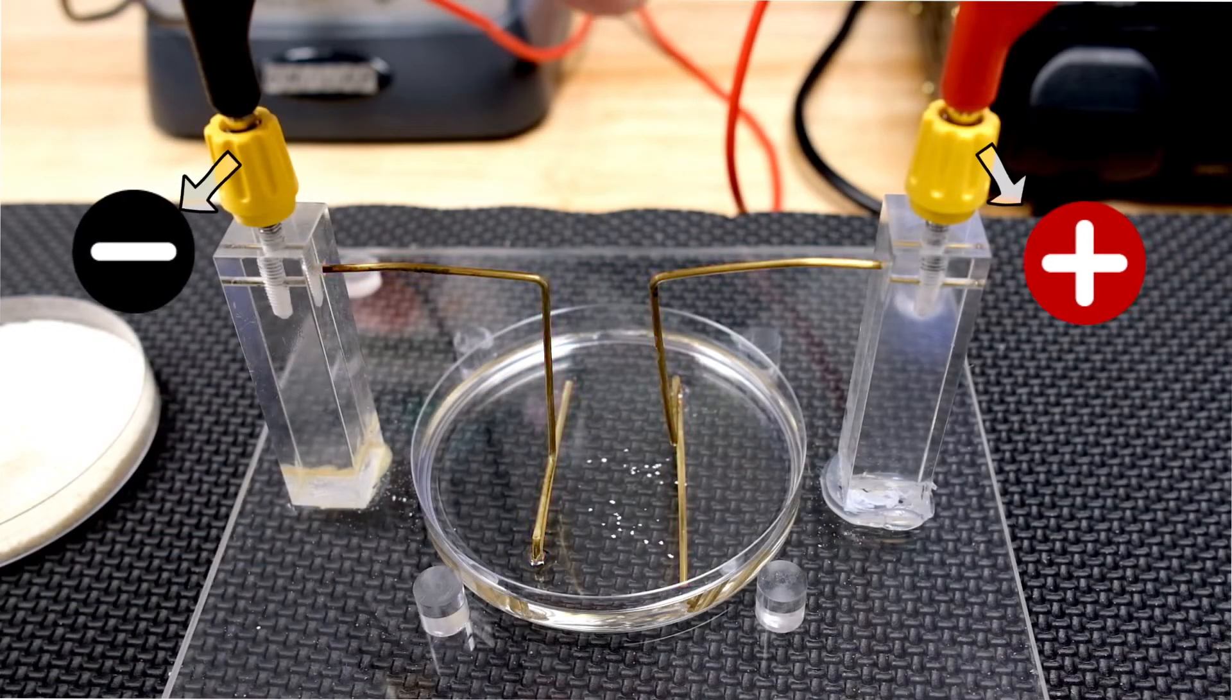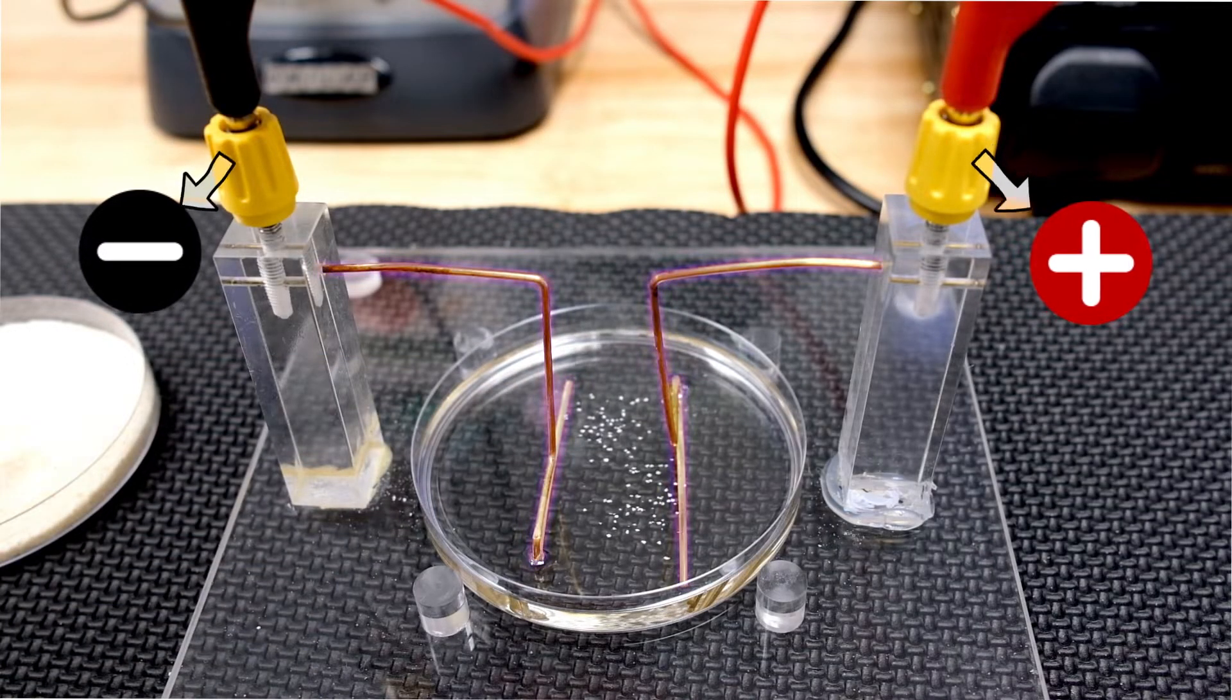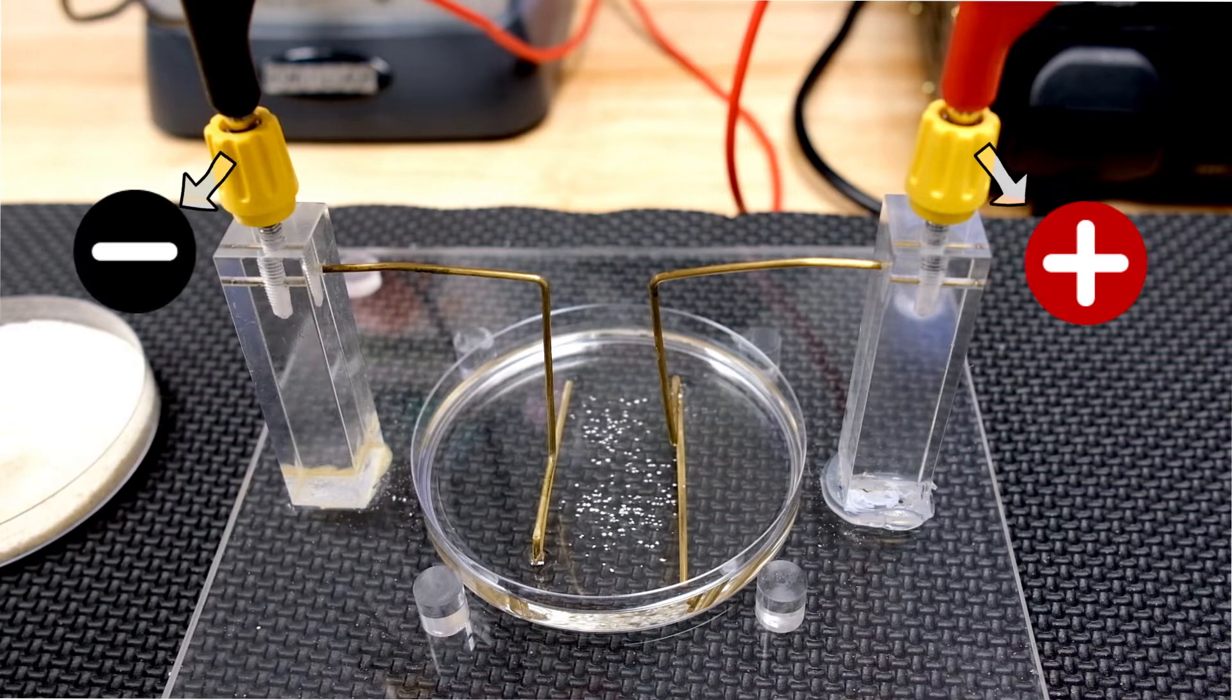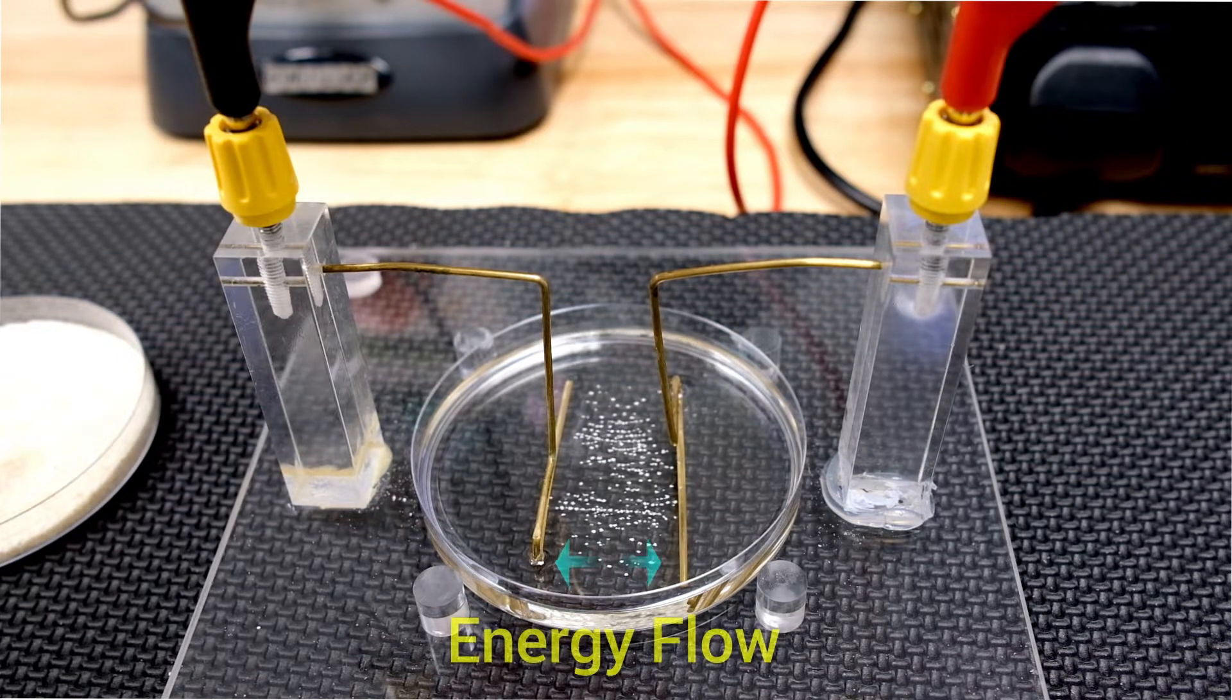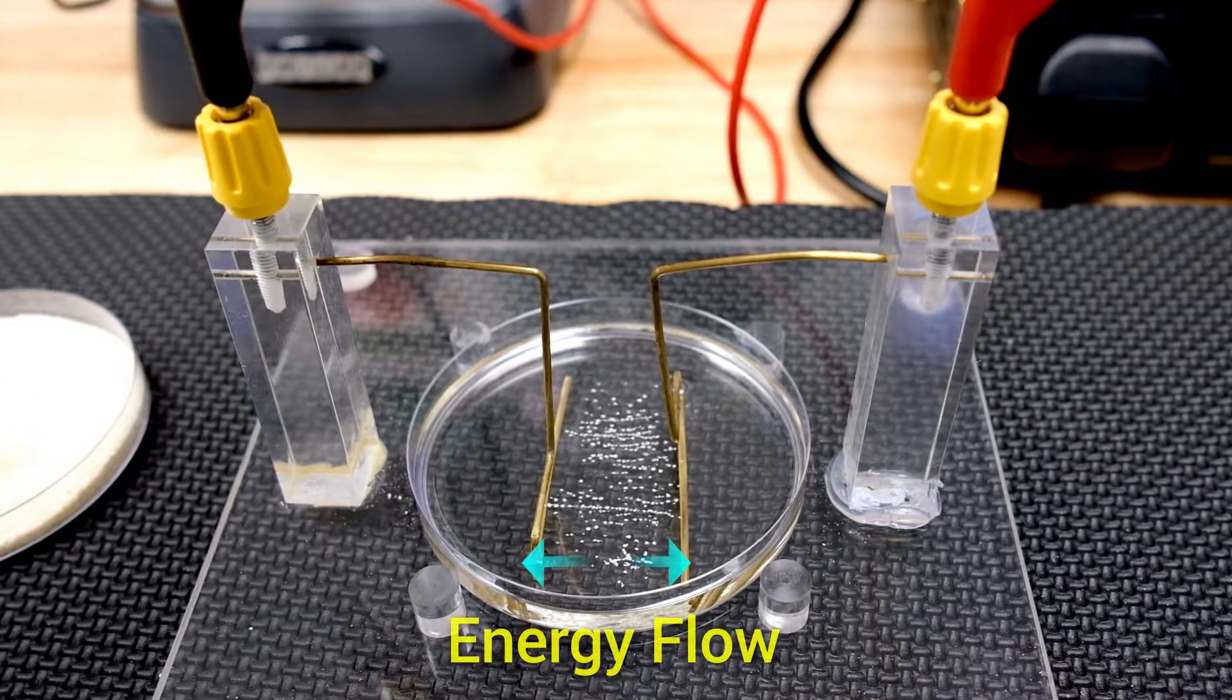While applying negative and positive energy, I am pouring the polarizable powder into the liquid insulator. As you can see here, the energy starts to flow and the powder starts to move in both directions.